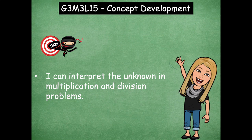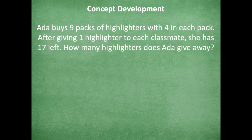We'll also use letters to represent the unknown. Our first problem says: Ada buys nine packs of highlighters with four in each pack. After giving one highlighter to each classmate, she has 17 left. How many highlighters does Ada give away? So we come right to our question — can we solve that right away by knowing there are nine packs with four in each, she gives one to each classmate, and 17 are left?